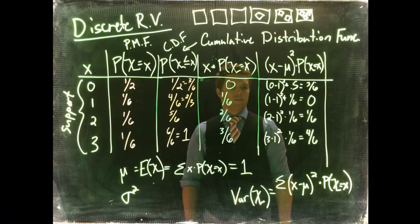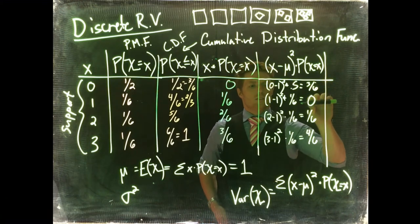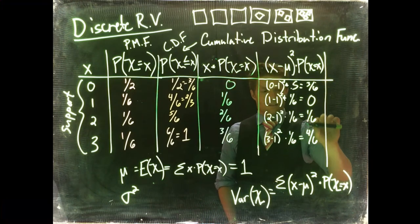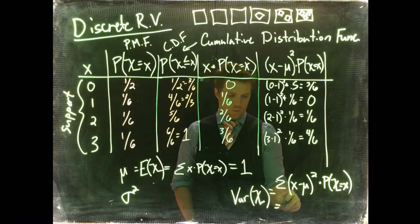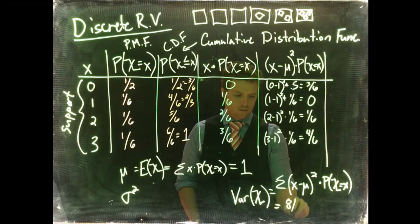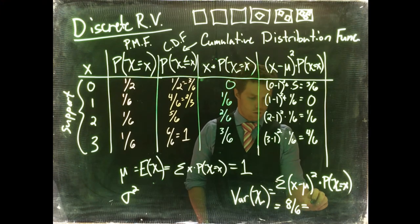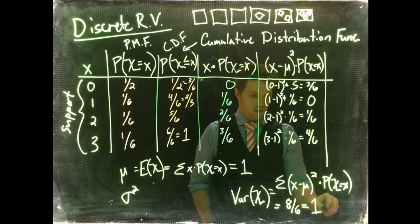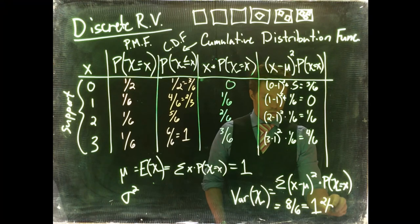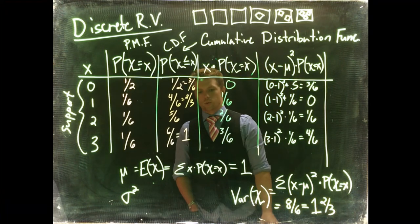Okay, so what do we have together? We have 3/6, 4/6, 8/6. So this is going to equal 8 divided by 6, which is equal to 1 and 2/3 is equal to our variance.